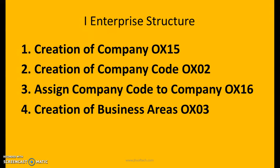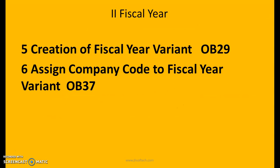We'll quickly revise all the transaction codes here. In the enterprise structure, this is where we start the configurations in SPRO. Creation of company: transaction code OX15. Creation of company code: OX02. Assign company code to company: OX16. Creation of business areas: OX03. Creation of fiscal year variant: OB29. Assign company code to fiscal year variant: OB37.